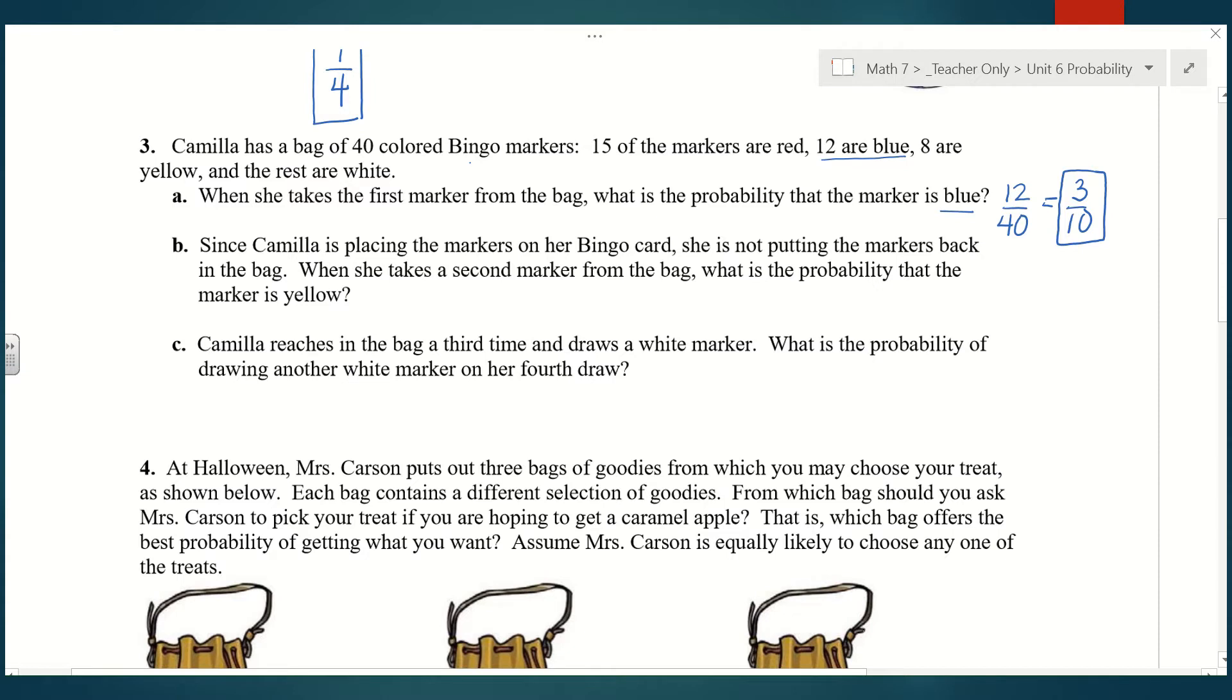Part B, since Camilla is placing the markers on her bingo card, she is not putting the markers back in the bag. When she takes a second marker from the bag, what is the probability that the marker is yellow? This is what we talked about with without replacement. If you take something and don't put it back and then pick again, your total number changes. She's taken a marker, didn't put it back, and now she's picking again. Instead of our total markers being 40, now it's only 39 because she never put the first one back. The probability that she gets a yellow marker, there's 8 yellow in the bag, would be 8 out of 39 instead of 40. We can't reduce that, so that's our final answer.